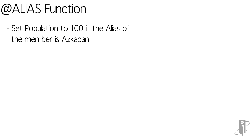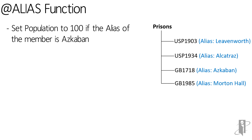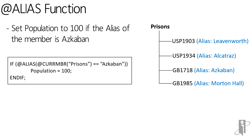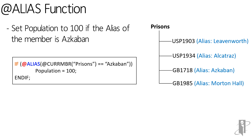For another example, let's say we want to set the population measure to 100 if the alias of our member is Azkaban. We have a prisons dimension with aliases assigned to each member: Leavenworth, Alcatraz, Azkaban, and Morton Hall. So if the alias of our current member of the prisons dimension is equal to Azkaban, population equals 100.